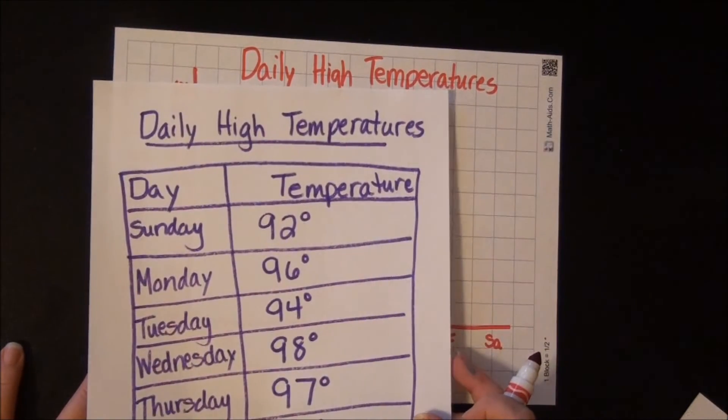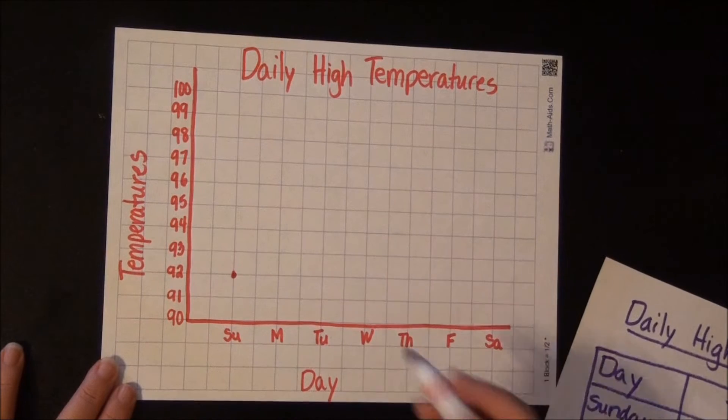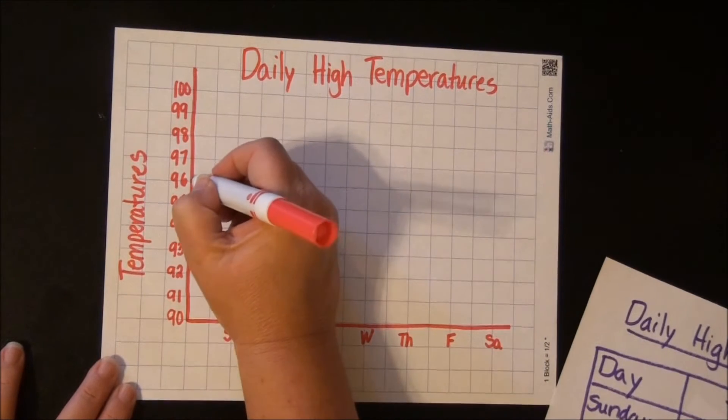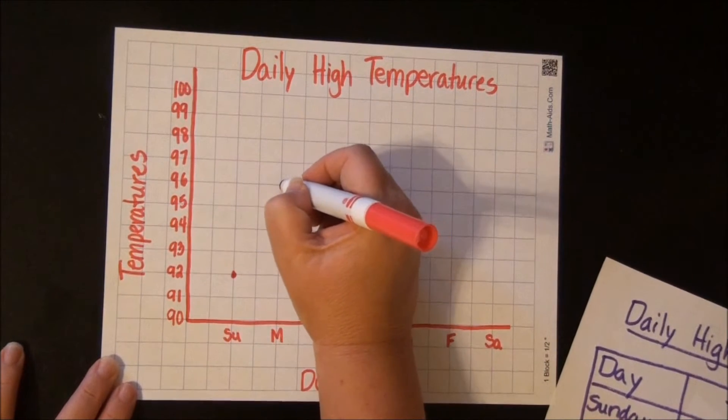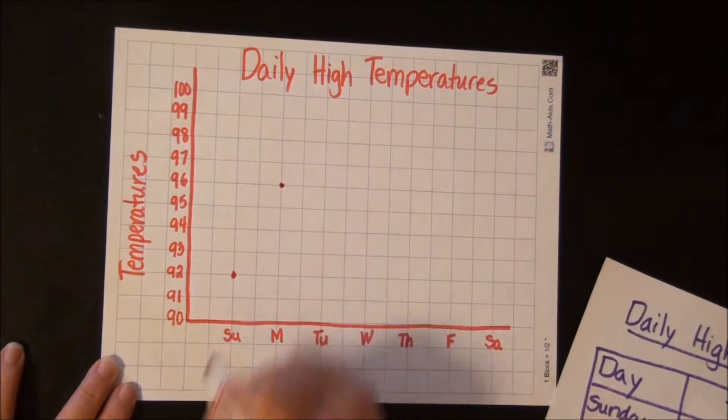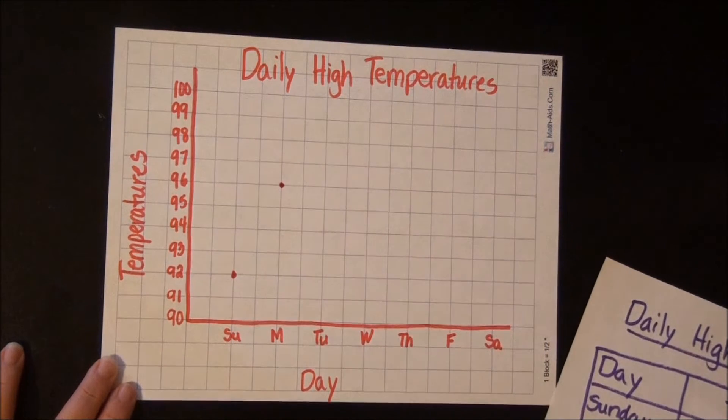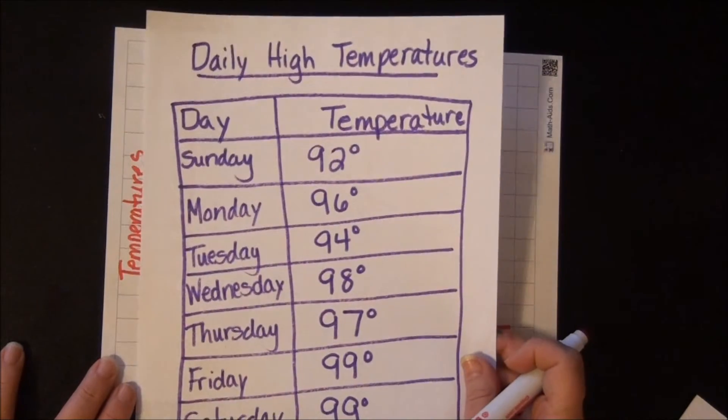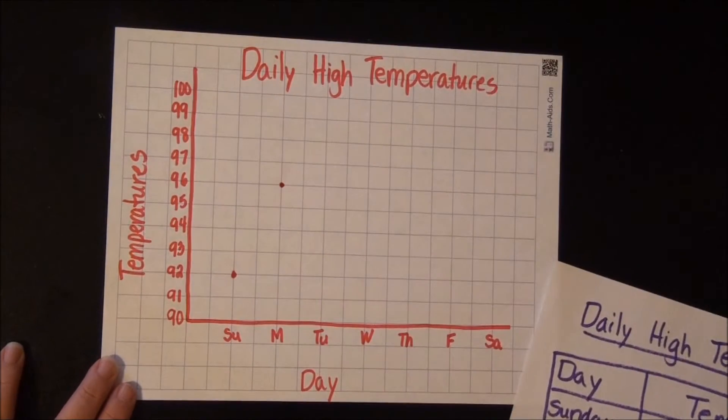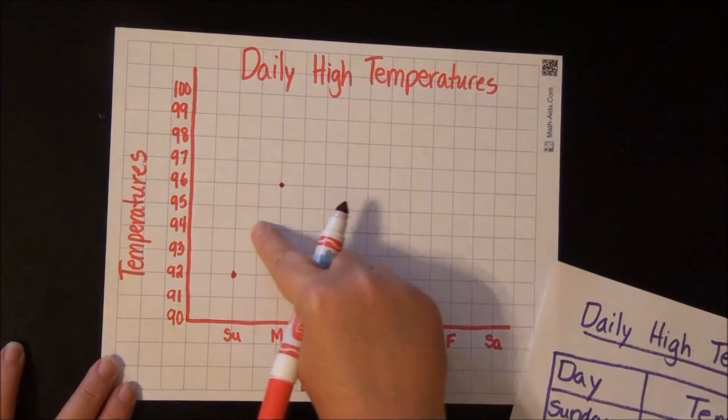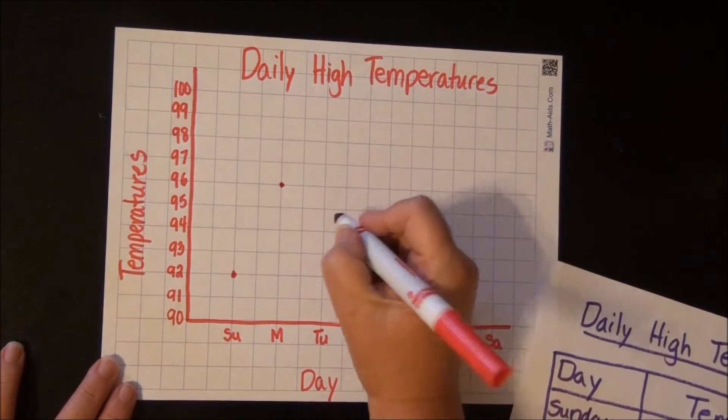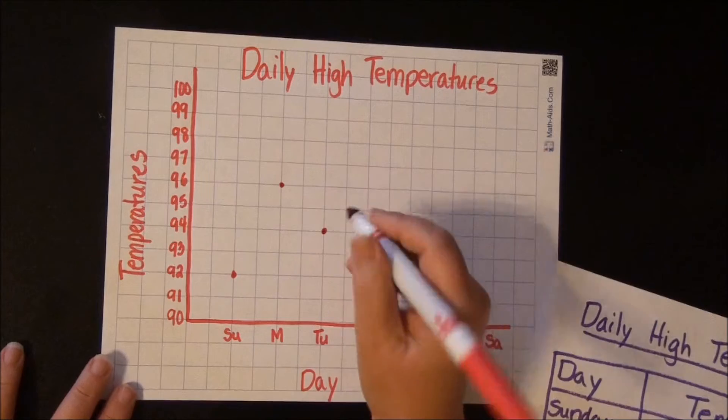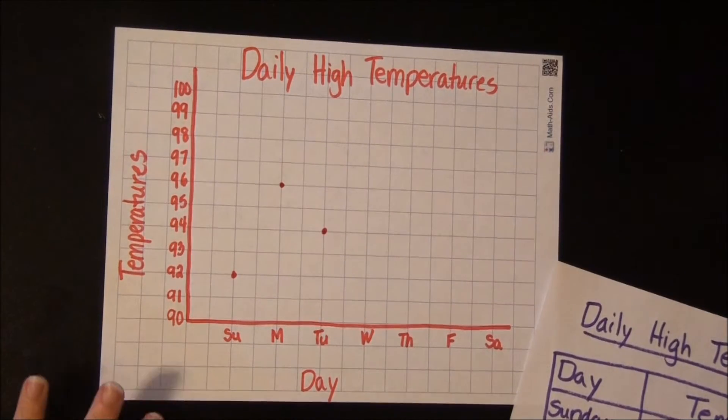Monday was 96. So we're going to slide up to 96, go over to Monday, put a dot right there. It's just a little dot. Tuesday was 94. Slide up to 94, go over to Tuesday, plot your point right where the lines cross over.